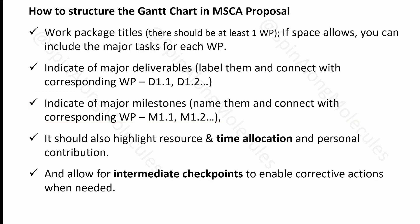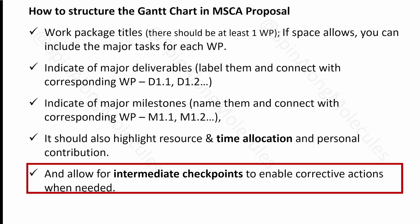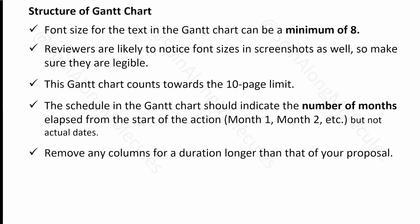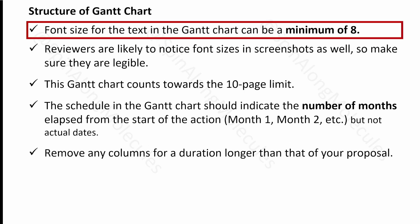The Gantt chart should also highlight resource and time allocation — it should be clear whether the time you want to allocate is justified — and also personal contribution. If possible, allow intermediate checkpoints in your Gantt chart so that if something is not going well, you can easily monitor progress and change your plan or actions.